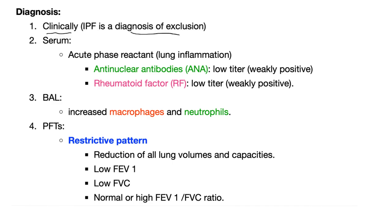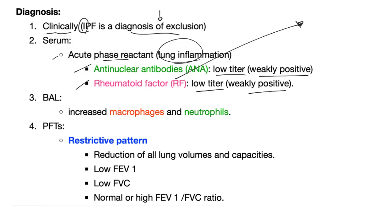Clinically, idiopathic pulmonary fibrosis is a diagnosis of exclusion — it's idiopathic, so of course we're going to exclude everything else. You might find acute phase reactants because of the inflammation. You can also find antinuclear antibodies or rheumatoid factors, but they are low titer or weakly positive. Contrast that with rheumatoid arthritis, where you'll have high titers of rheumatoid factor and/or anti-CCP antibody.